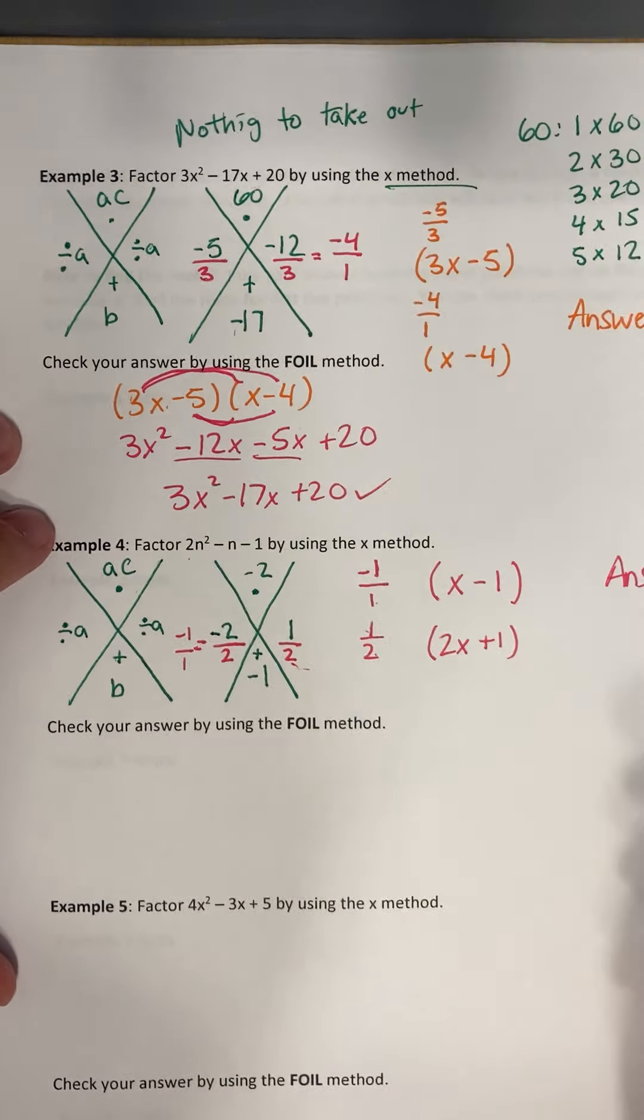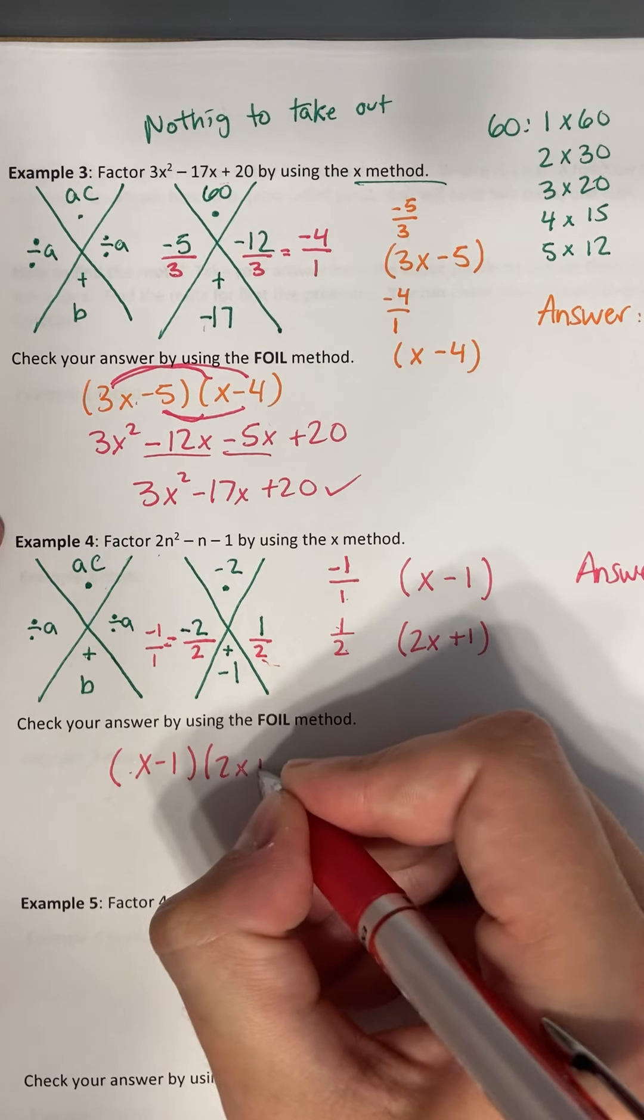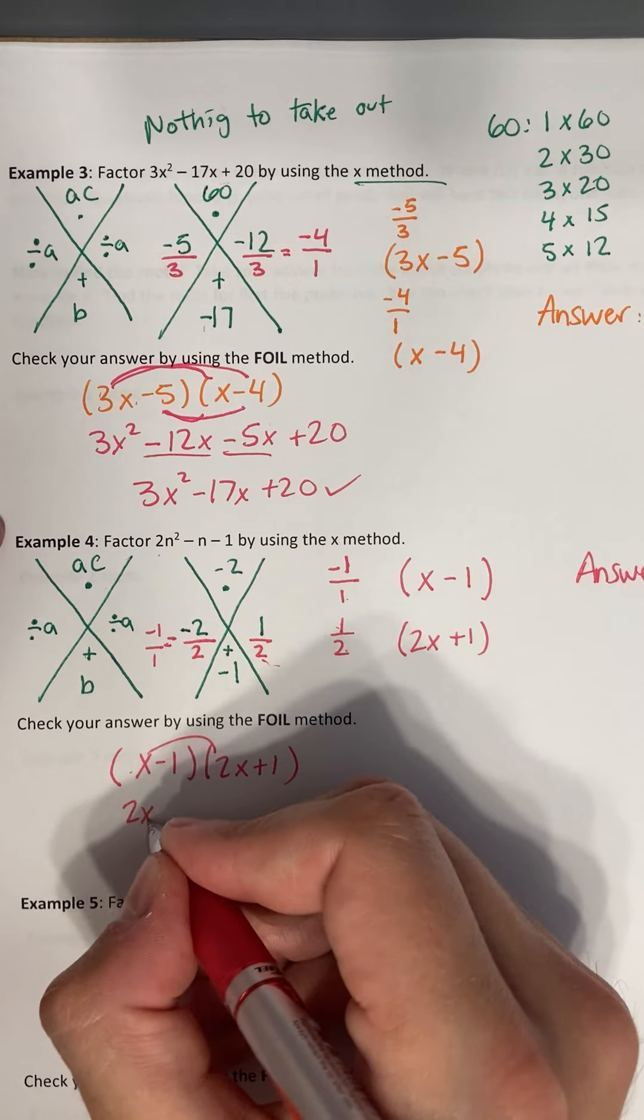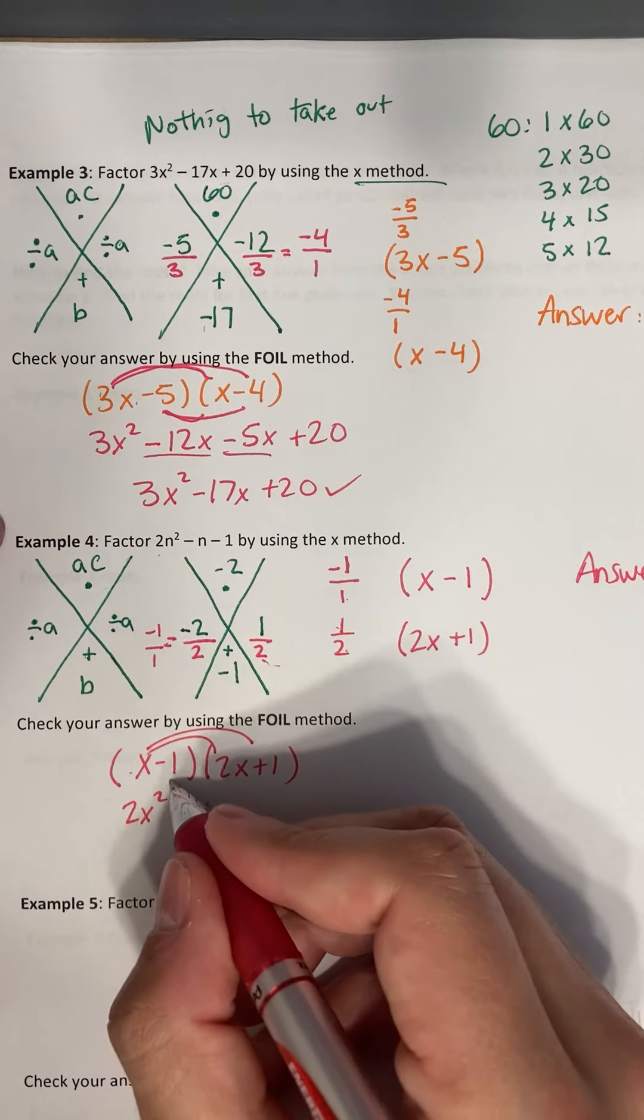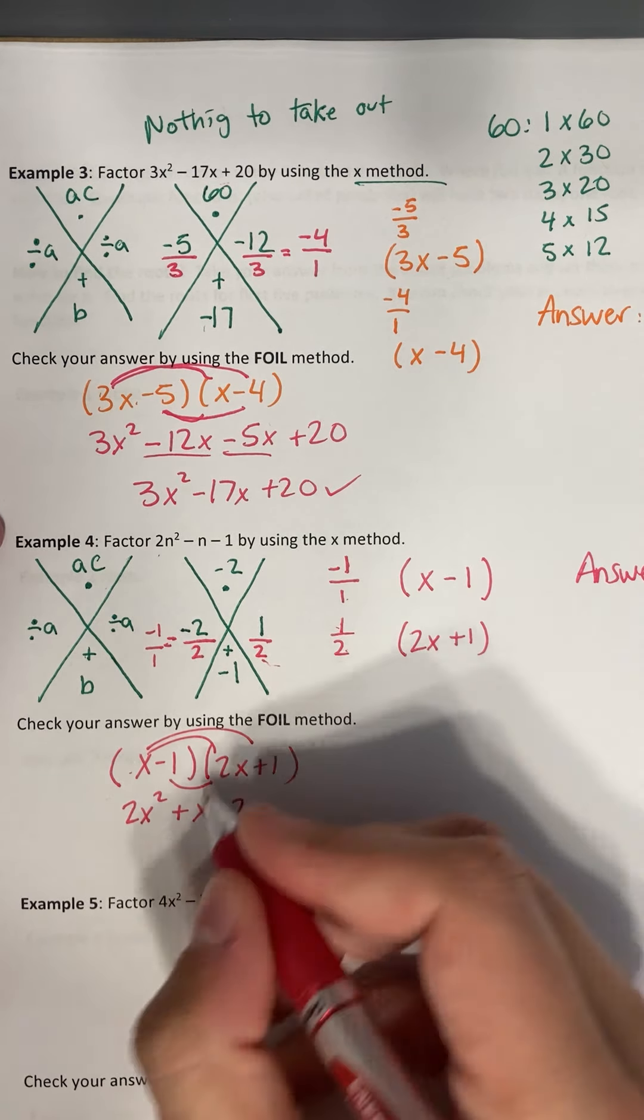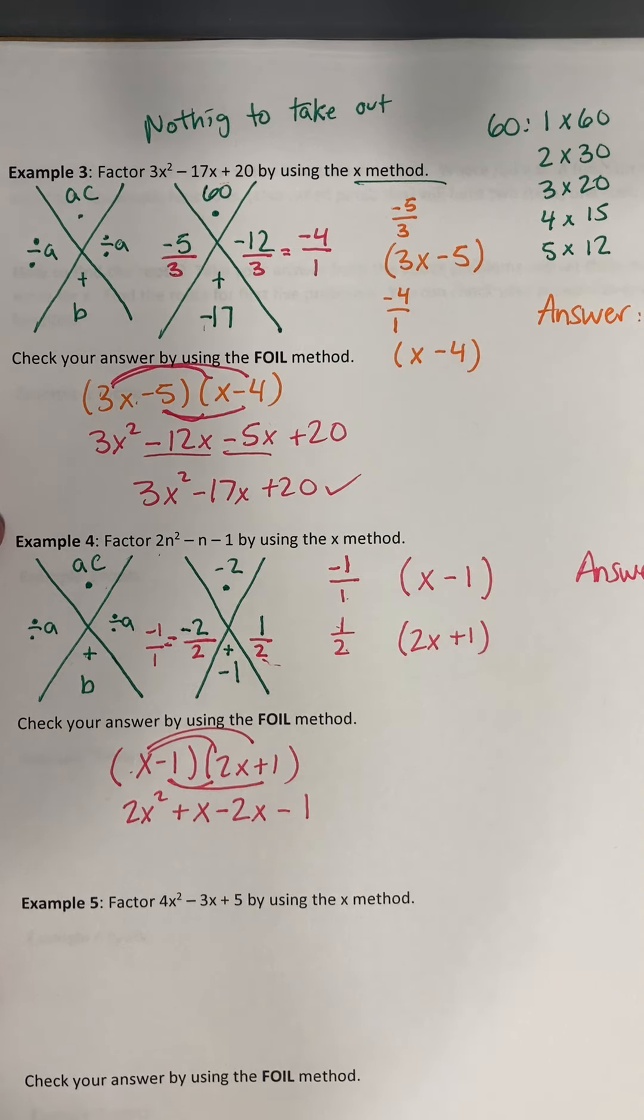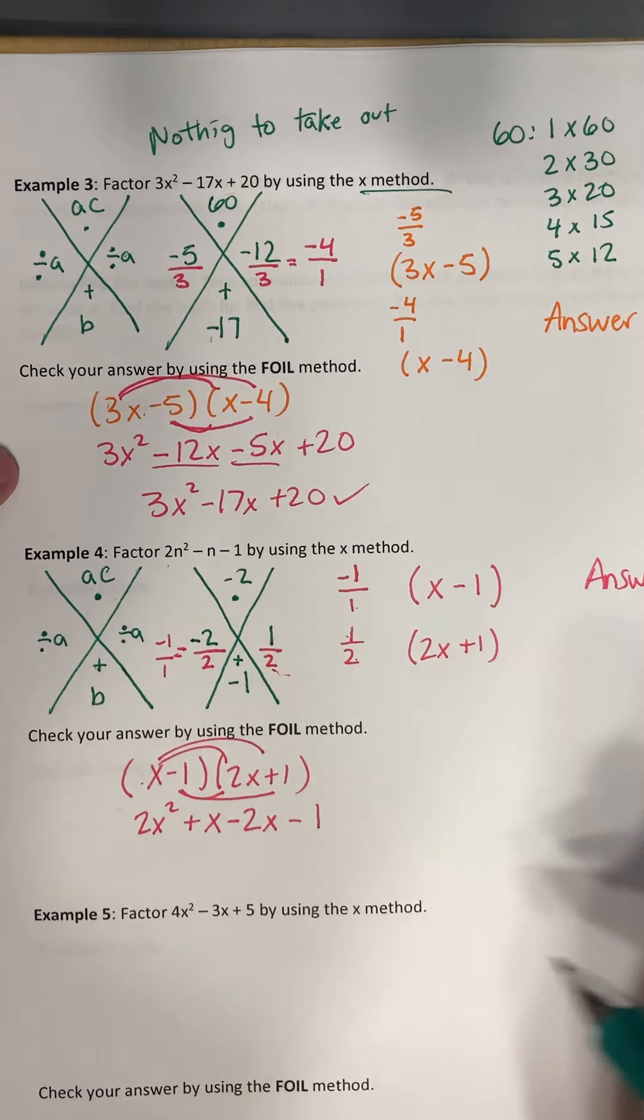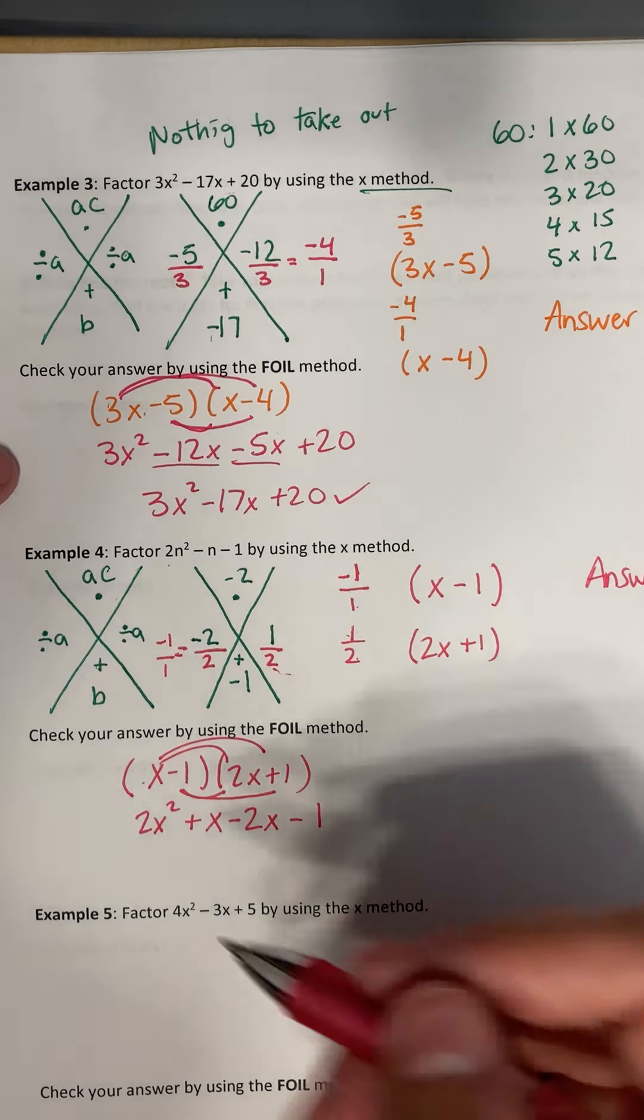Let's check it. So x minus one, two x plus one. I will FOIL. So we get two x squared. This will be plus x. Negative one times two x would be a minus two x. And then this would be a minus one. Anybody notice what I'm doing wrong so far? Yeah, I'm using x's instead of n's. So we'll change that here in a sec. So let's just keep doing x's for now.